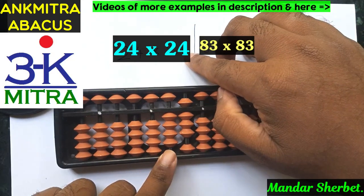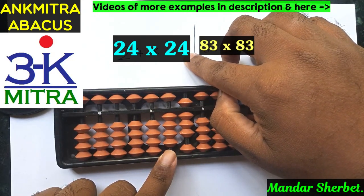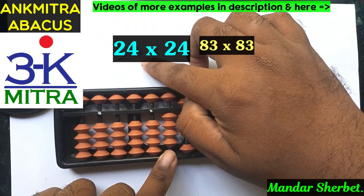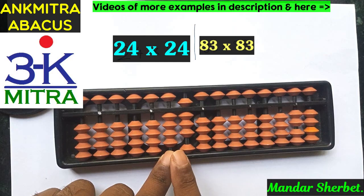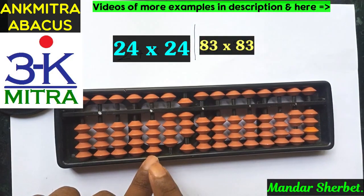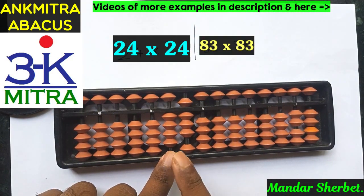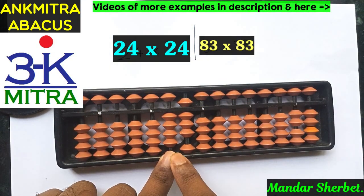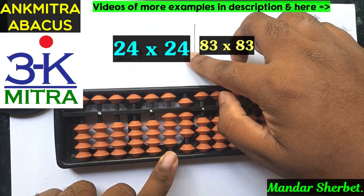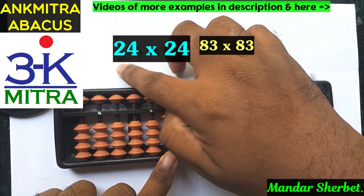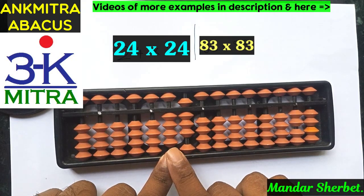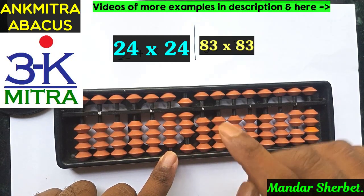For the second part we multiply the units place digit with each of these digits, starting again on the third rod — not from the fourth rod. In the first part we started from the fourth rod then moved to the third rod; now in the second part we start from the third rod for this units place digit. So 4 multiplied by 2 is 08: zero on this rod, eight on the next rod.